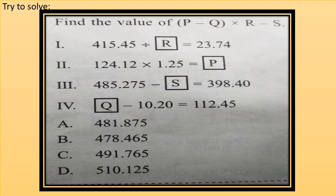Find the value of P minus Q into R minus S. Now first part is 415.45 divided by R equals to 23.74. Now from first we can get the value of R. Now second is 124.12 into 1.25 equals to P. From second we will get the value of P.